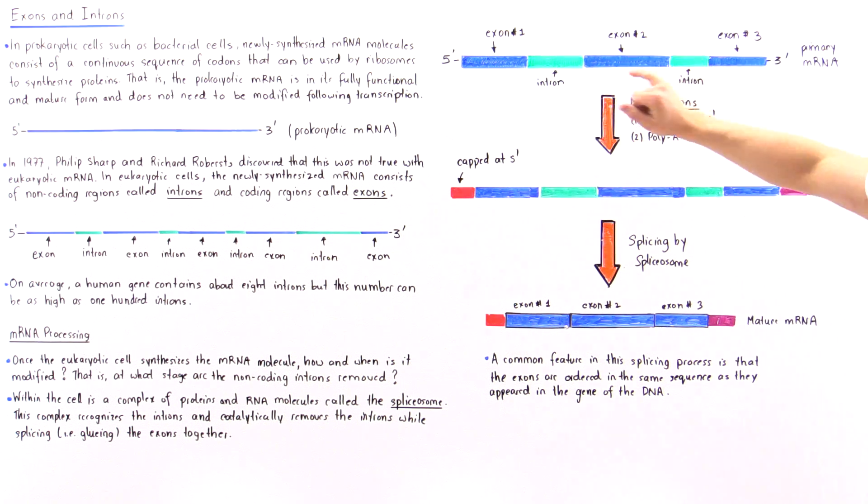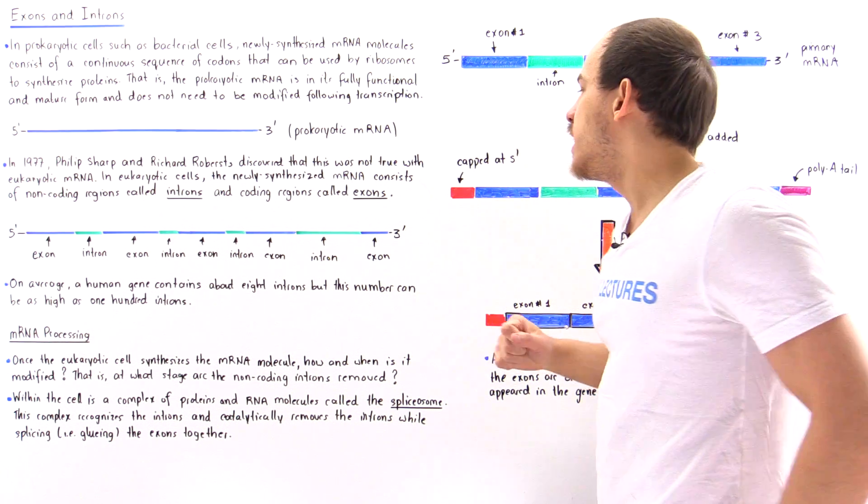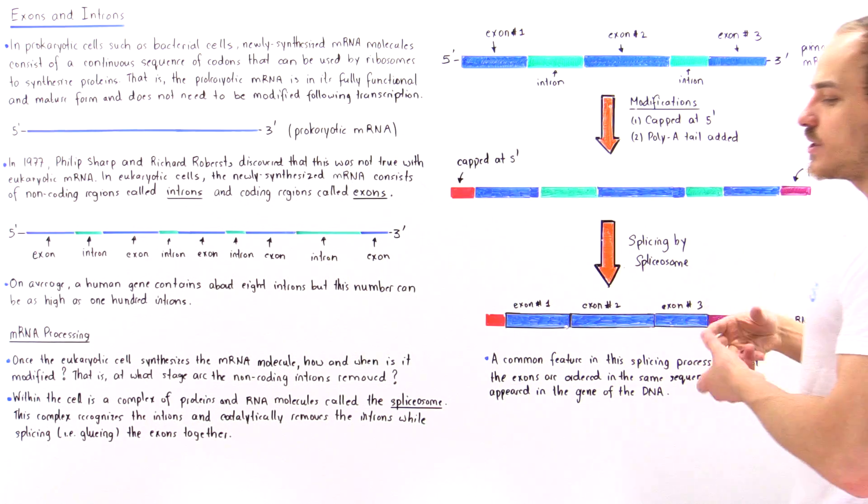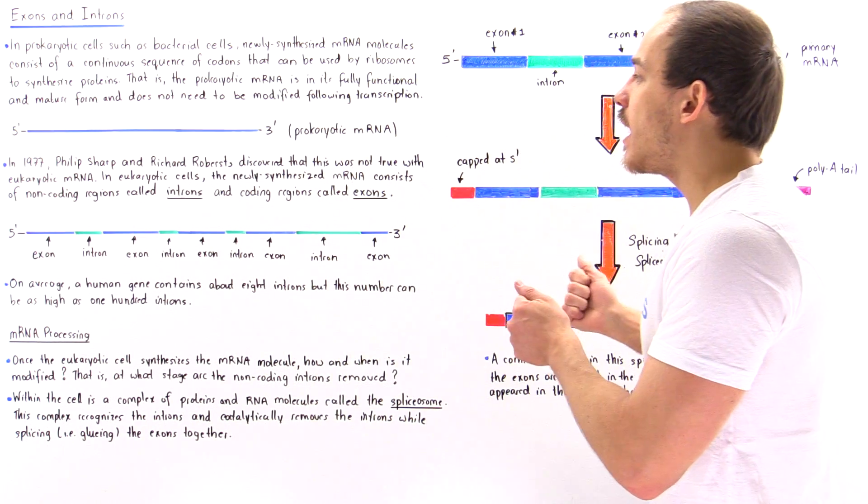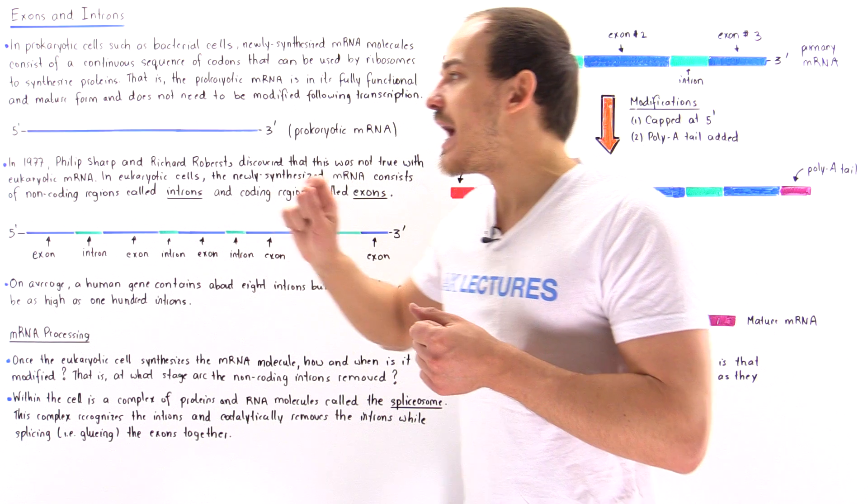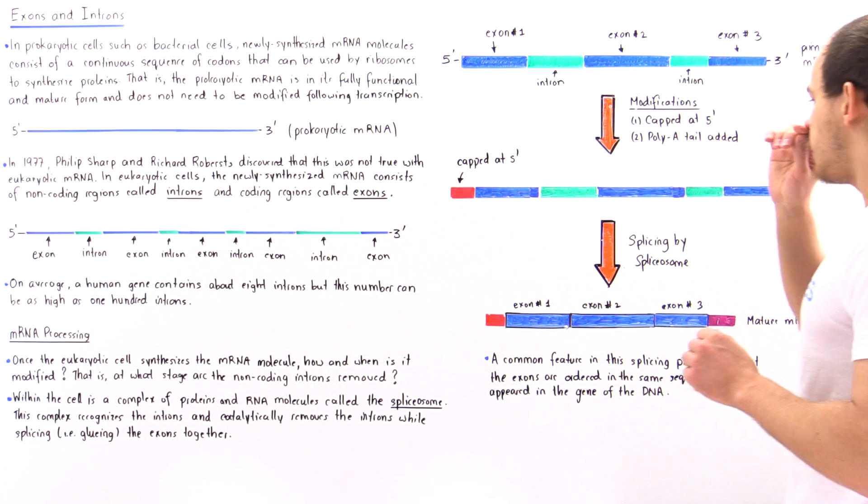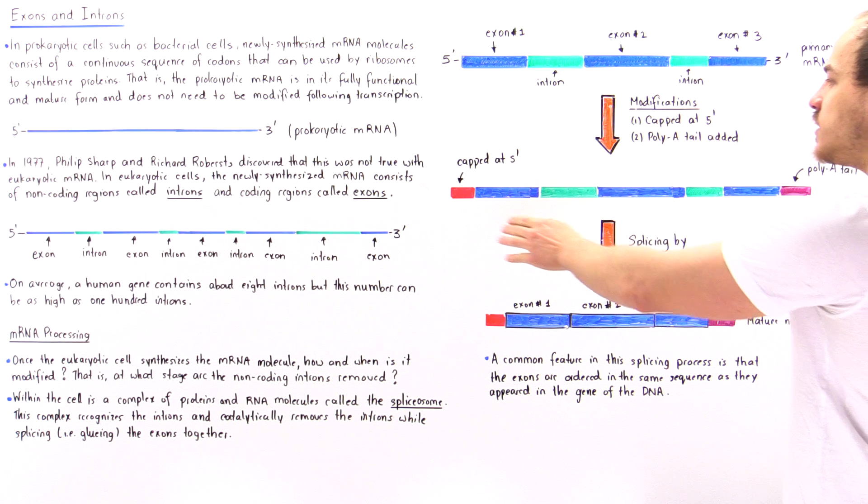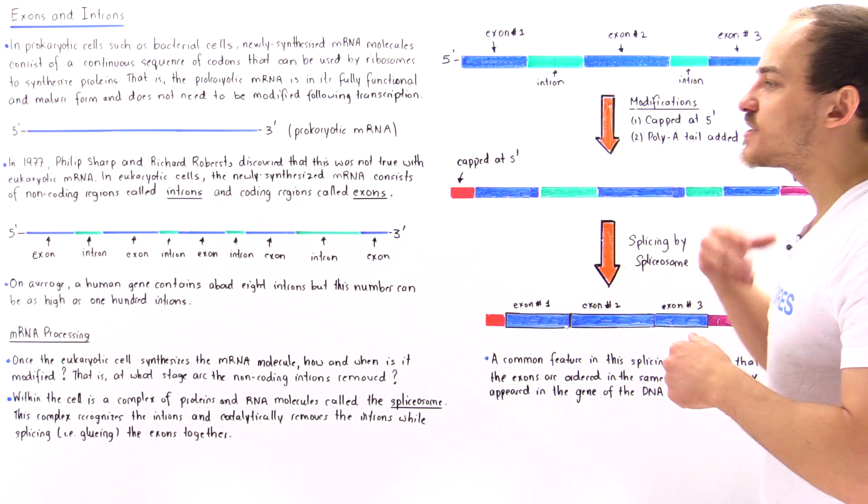So let's call this exon number one, exon number two, and exon number three. Now, first, we basically create these two modifications. We cap our five end, and we basically add the poly-A tail on the other end of that particular mRNA molecule. And what this basically allows that mRNA molecule to do is it prevents the mRNA molecule from being broken down, and it also allows it to basically reach that final destination. And we'll discuss more about that in a future lecture. Now, once we cap this end, and once we add that tail, the next process is the splicing process.